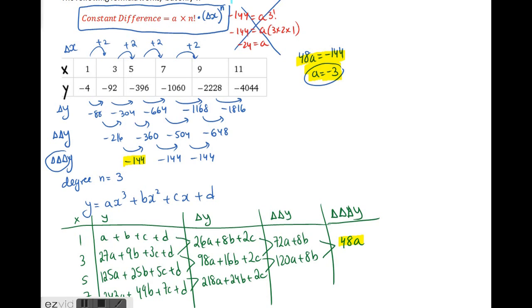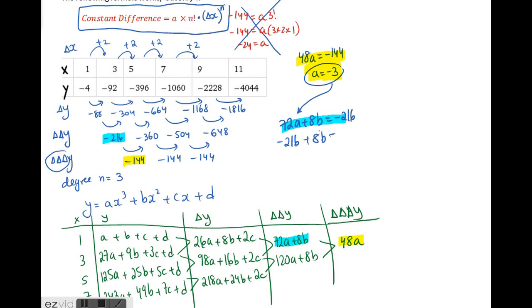Next, we use the second difference column. Taking the first entry of the symbolic second differences and matching it with the first numerical second difference value gives an equation. We already know a, so we solve for b. Plugging in a equals negative 3 gives negative 216, and solving for b yields b equals 0.